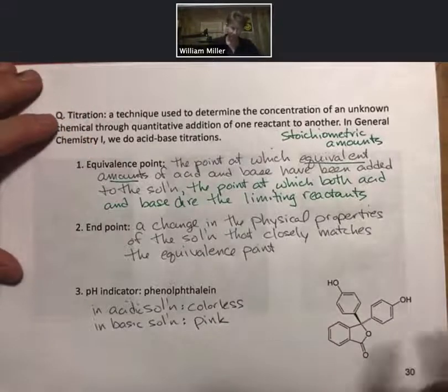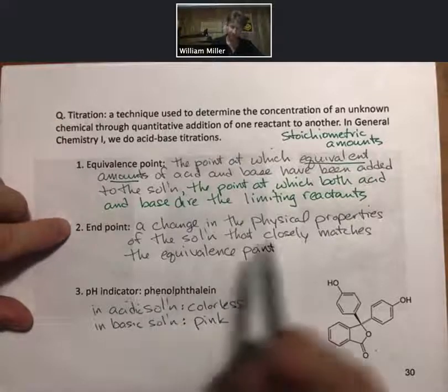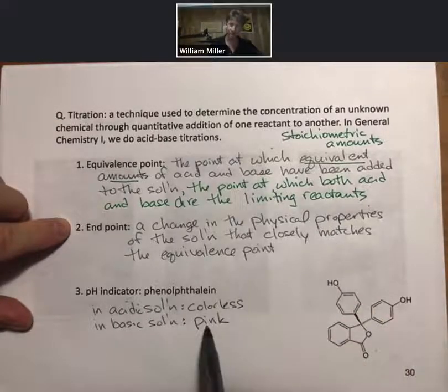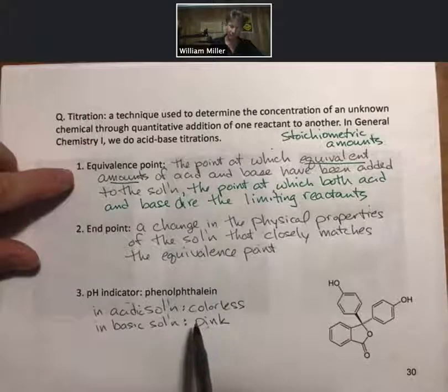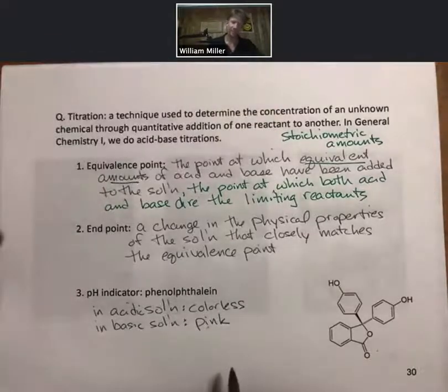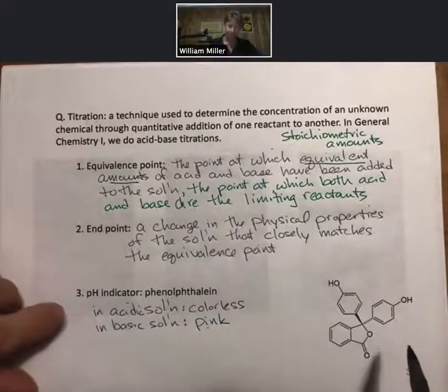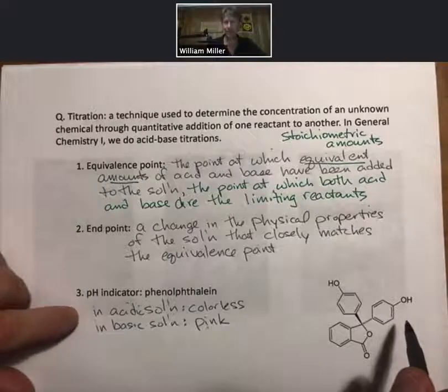The pH indicator, as an end point, the physical property change is the color of the solution. When it goes from acidic to basic, that's when you are going through a neutral solution, and a neutral solution has equivalent or stoichiometric amounts of acid and base. That's all you have to know for this course.